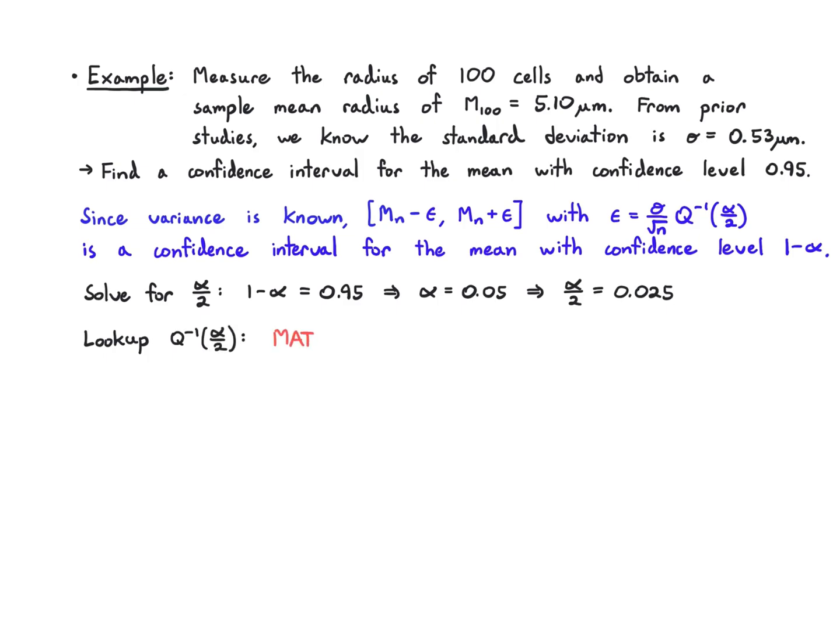Then the next thing is to look up Q inverse of alpha over two. We know that in MATLAB, the way that we do that is to plug in the Q func inverse of alpha over two. In this case, we plug in 0.025 and it's going to tell us that this is 1.96. You could have also gotten this from a lookup table.